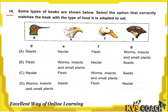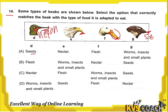Next question: some types of beaks are shown. Select the option that correctly matches the beak with the type of food it is adapted to eat. A short hard beak is for eating seeds. A long pointed beak is for sucking nectar. A hooked beak like an eagle's is for tearing flesh and catching prey. A broad flat beak is for filtering insects or worms from water. Option C is the right answer.